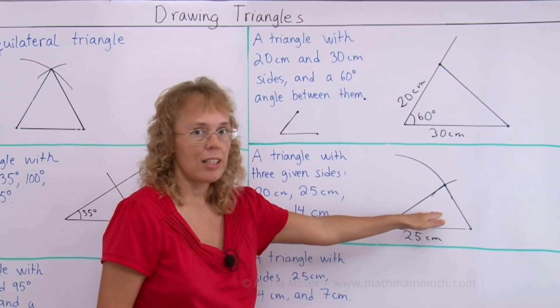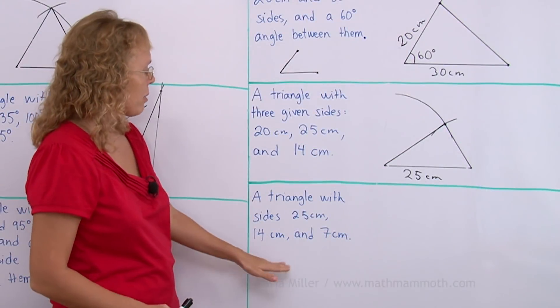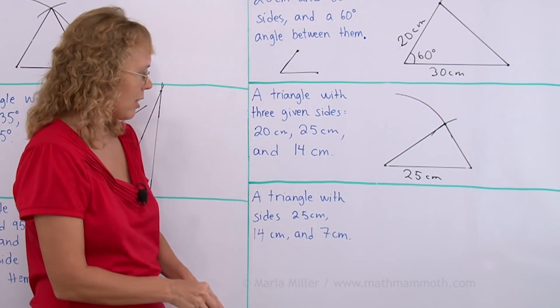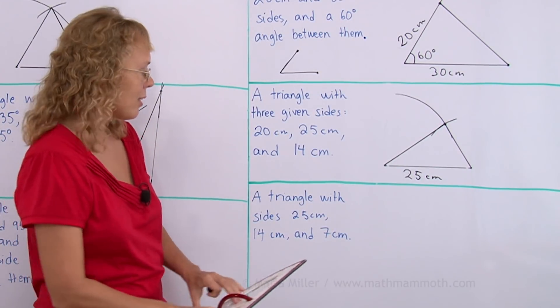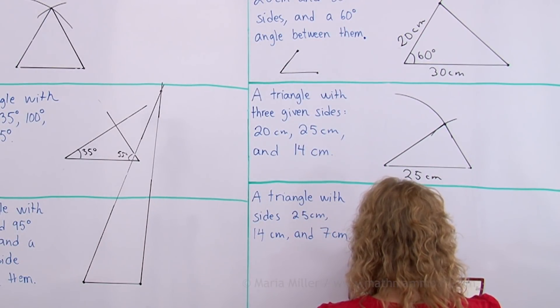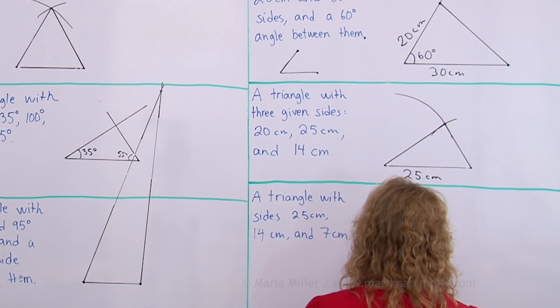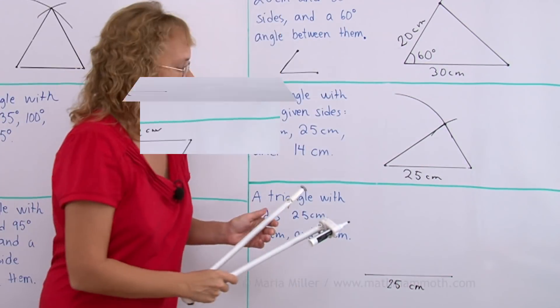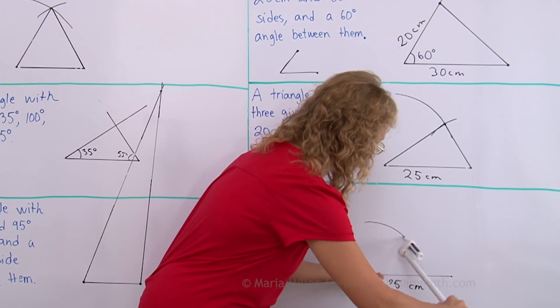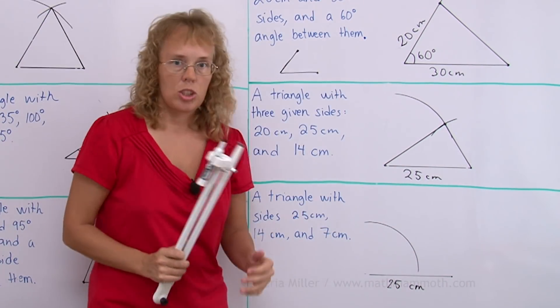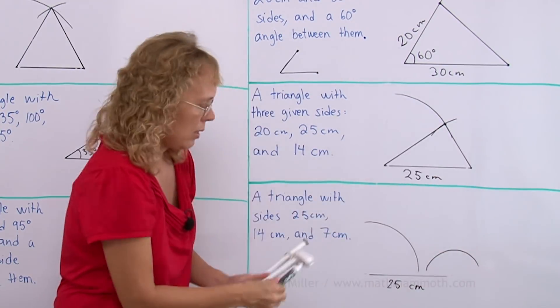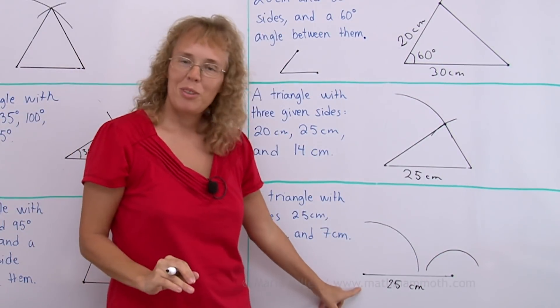Lastly a triangle with sides 25 centimeters, 14 and 7 centimeters. Let's try that. We're going to use the same technique. First I'll draw the 25 centimeter side here. And here's compass set to 14 centimeters. And then here's compass set to 7 centimeters.